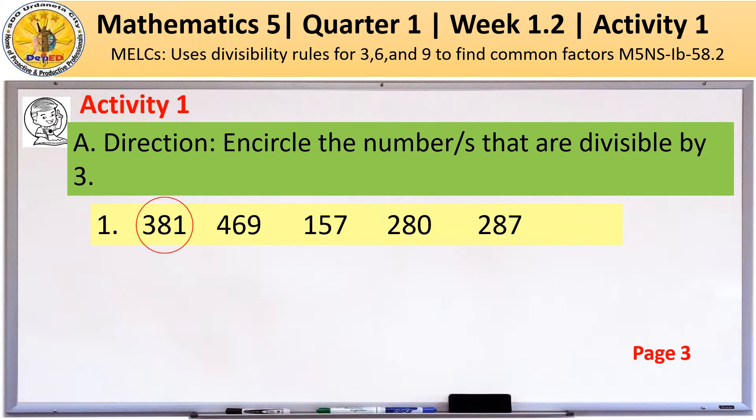Why? Following the rule in divisibility rule for 3, a number is divisible by 3 if the sum of all digits is divisible by 3. So, we have 3 plus 8 plus 1 is equal to 12. 12 is divisible by 3.